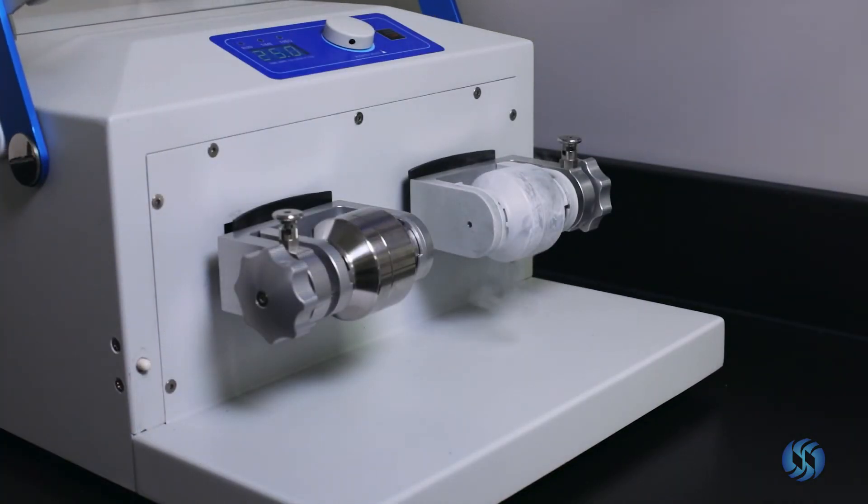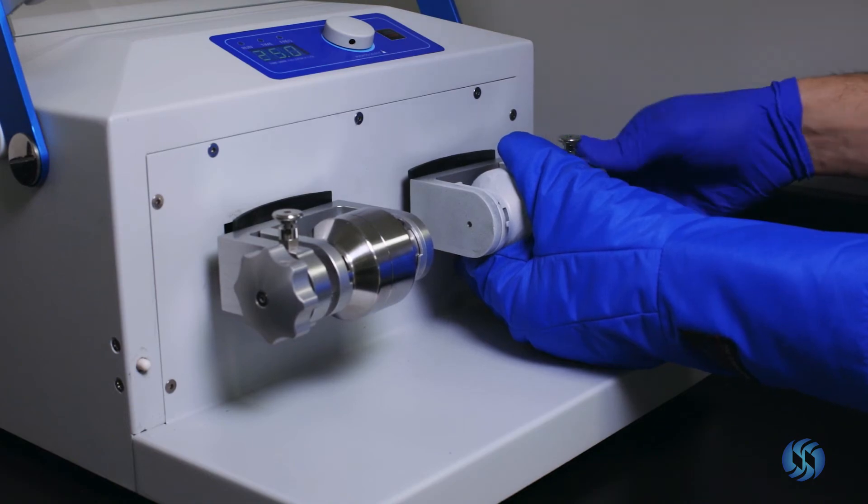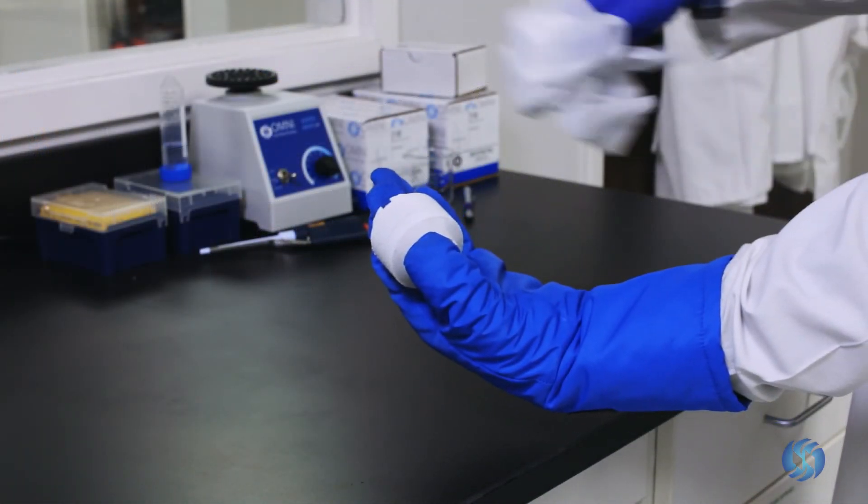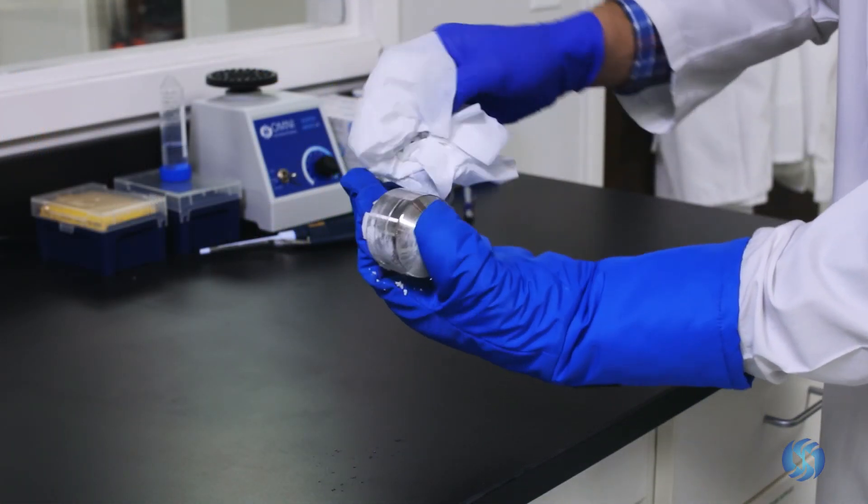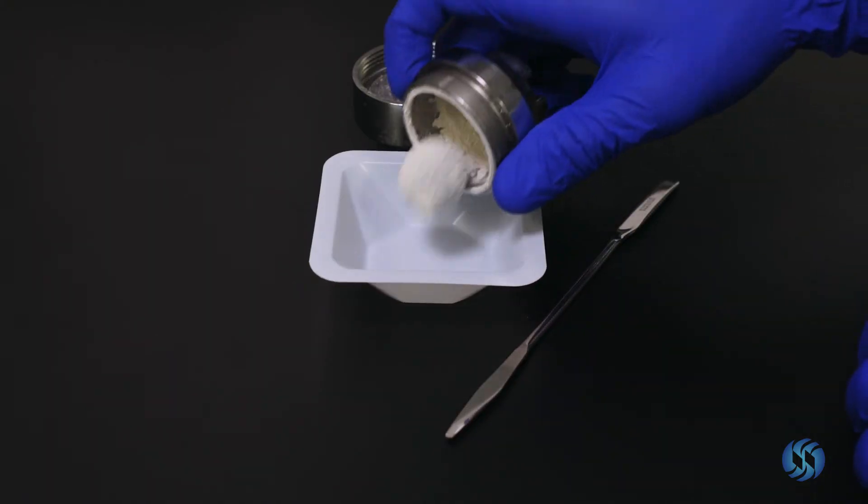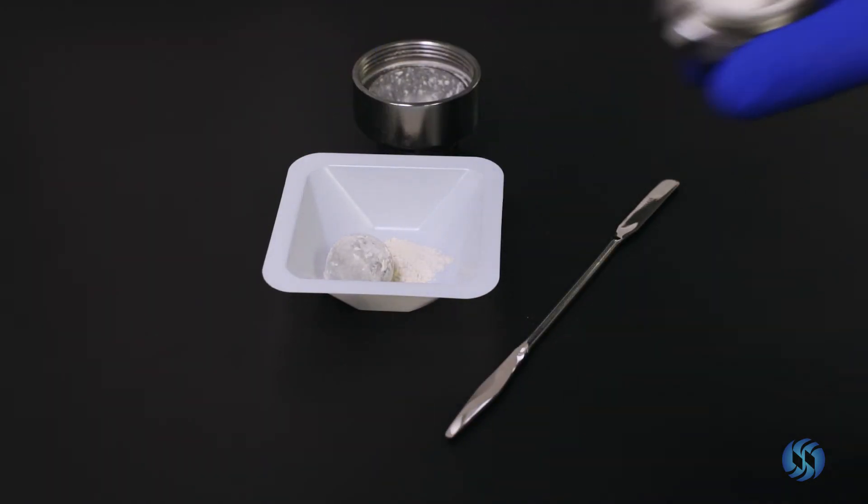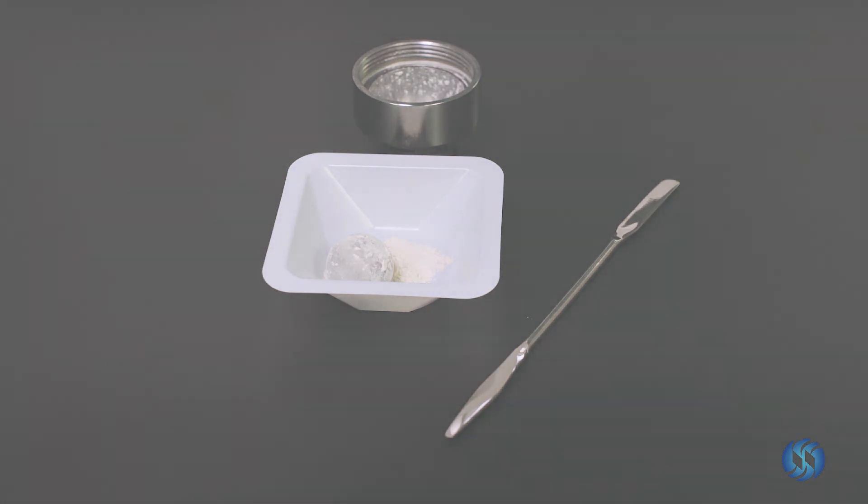Upon completion, unfasten the milling jar from the B-Rupter 96 and remove any excess condensation. Your bone sample is now ready for DNA and protein extraction.